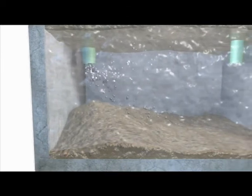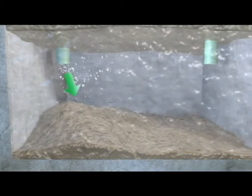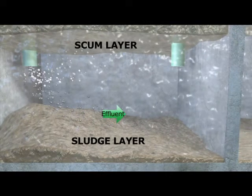Inside the tank, lighter materials like oil and grease float to the top, forming a scum layer, while heavier waste materials sink to the bottom, forming a sludge layer.